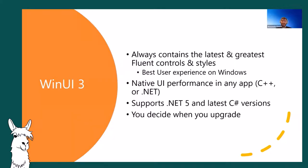For UWP developers, WinUI 3 is essentially the next version of UWP XAML but used in a more streamlined way. For Win32 developers, think of it as a new option to build modern applications. For example, a WinUI 3 desktop application is just a window — essentially an HWND — drawing on top of it. So you can call any Win32 API like SetWindowsHook and it just works.